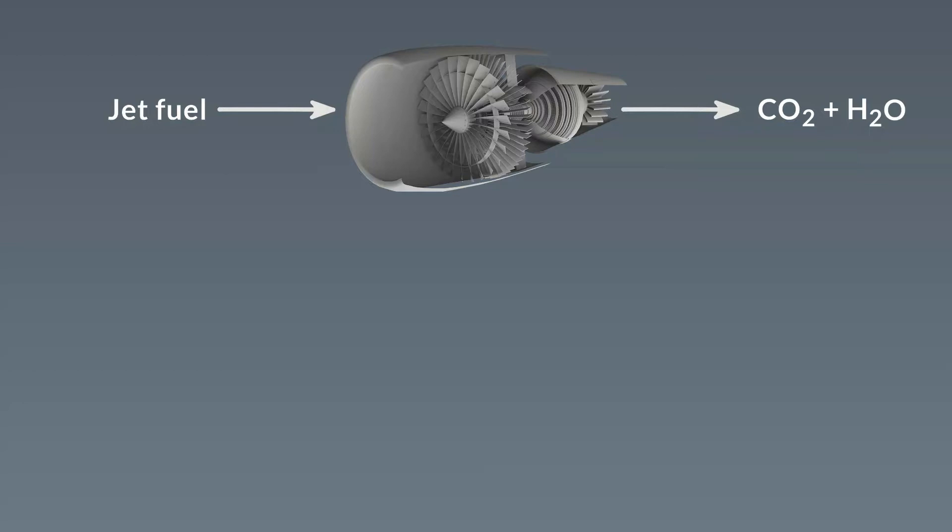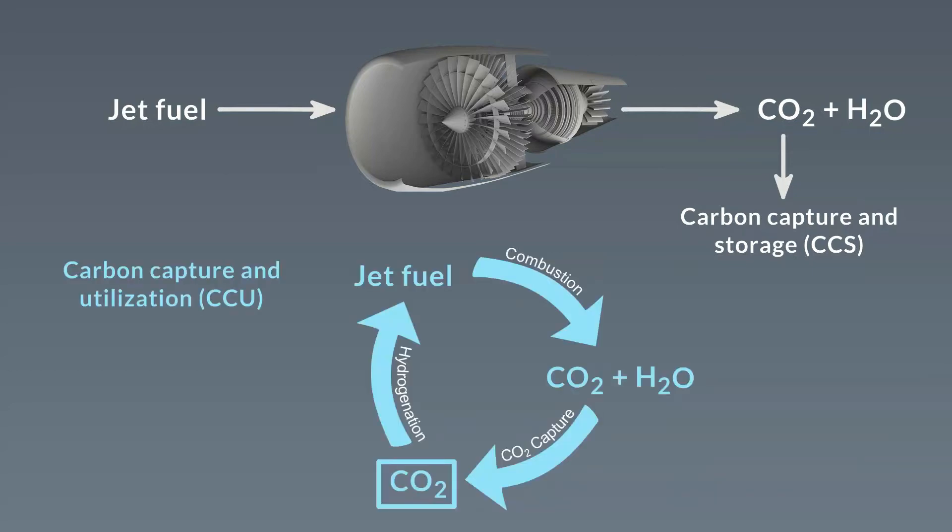So how do we make flying carbon neutral? It's possible to capture the CO2 from the air, liquefy it under pressure, and then inject it deep underground. Carbon capture and storage. Another way is to create a closed loop in which the CO2 is captured and used to make more jet fuel, establishing a CO2 circular economy.